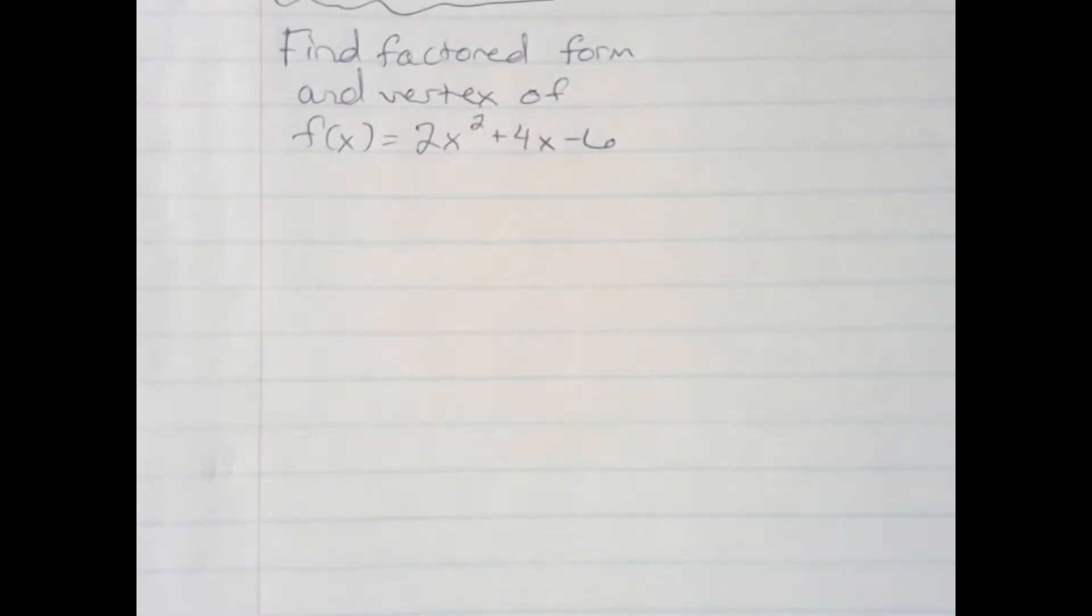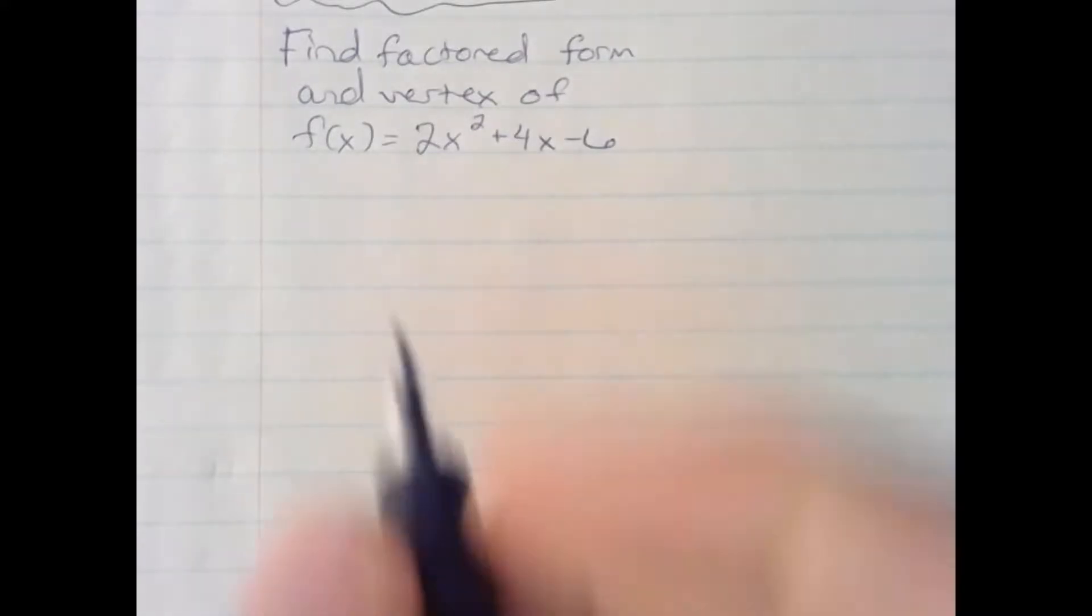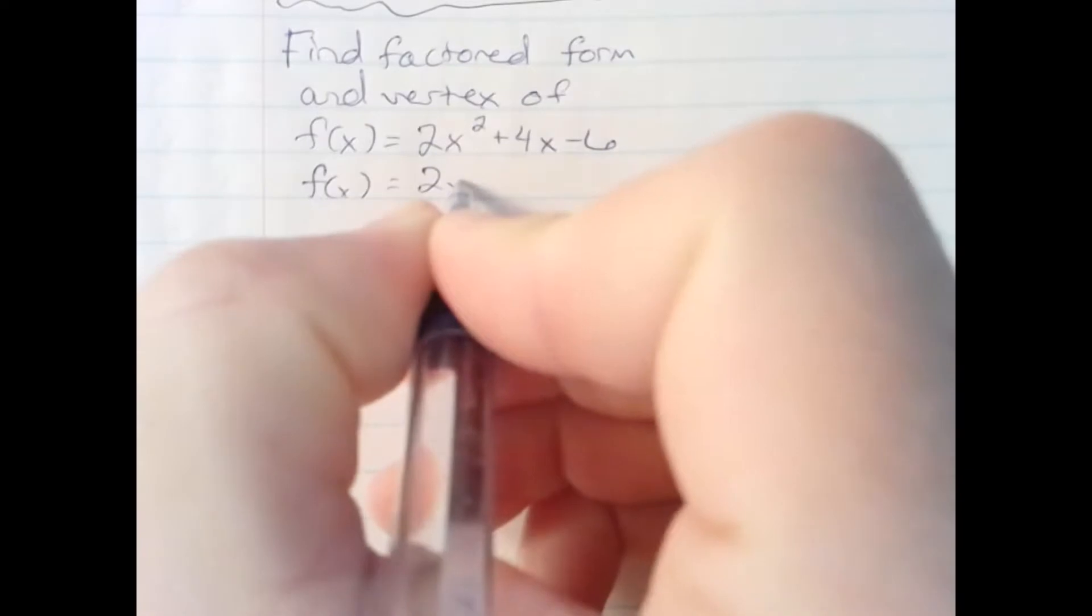Here we're going to find the factored form and vertex of 2x² + 4x - 6. First thing I'm going to do is factor out a 2, making the problem simpler.